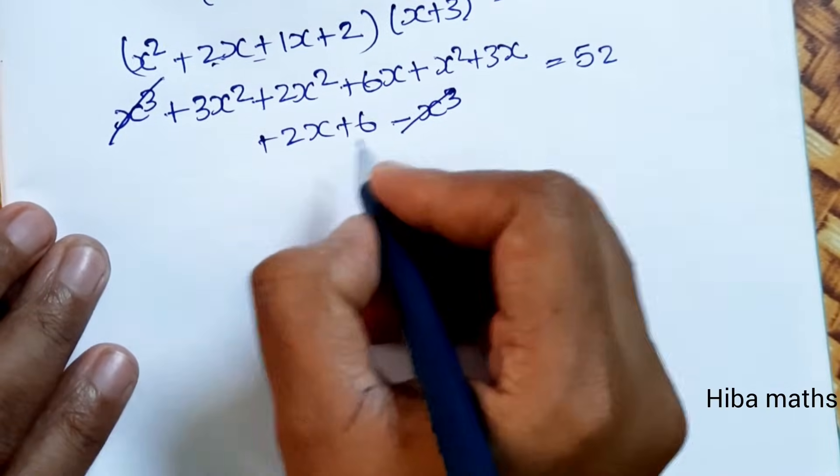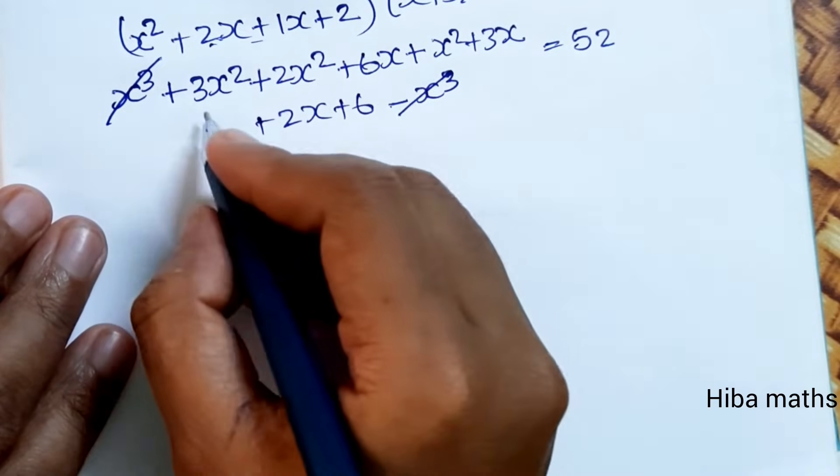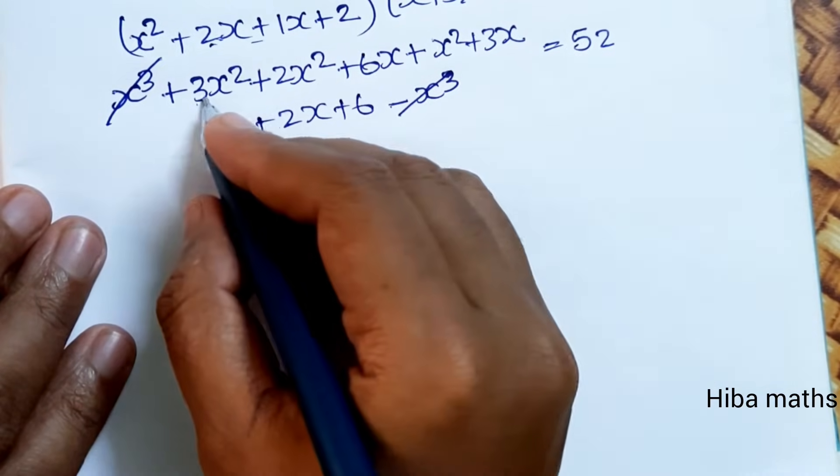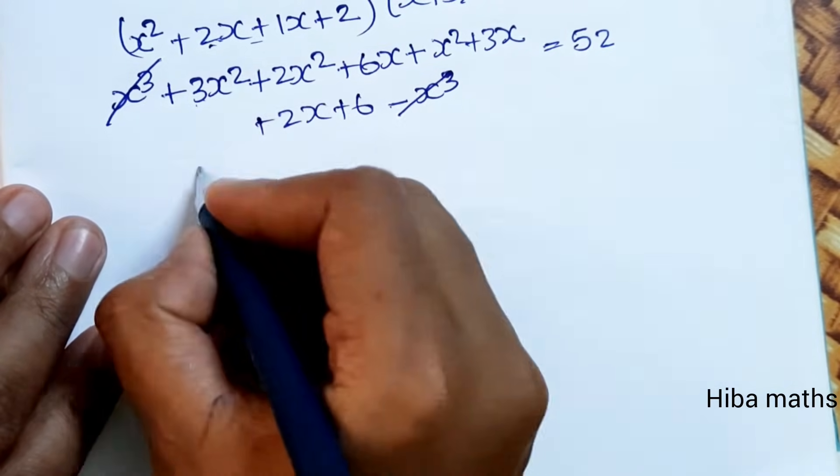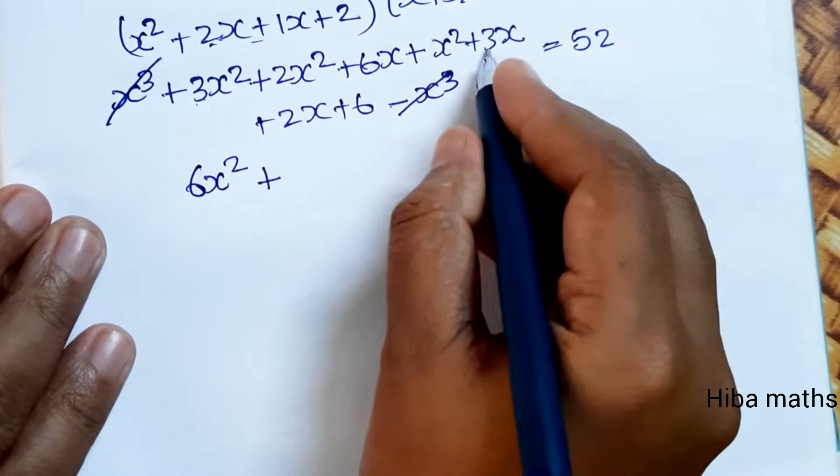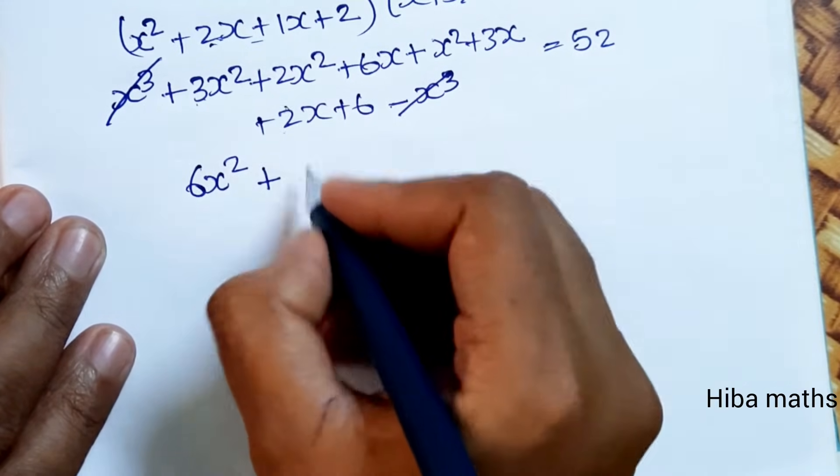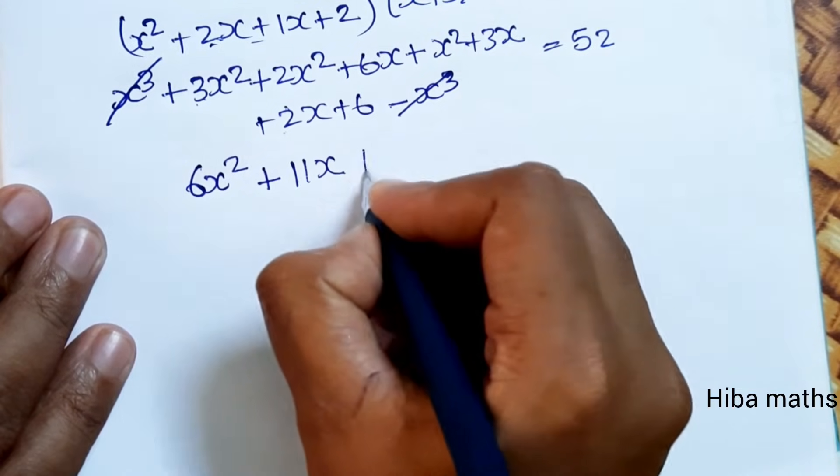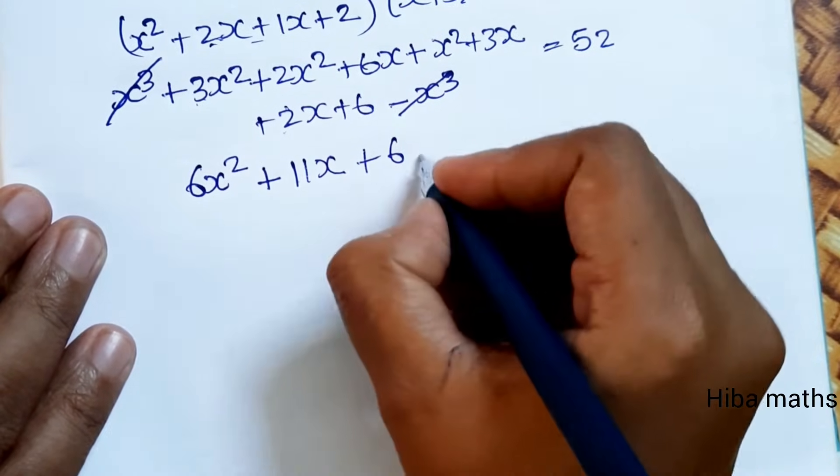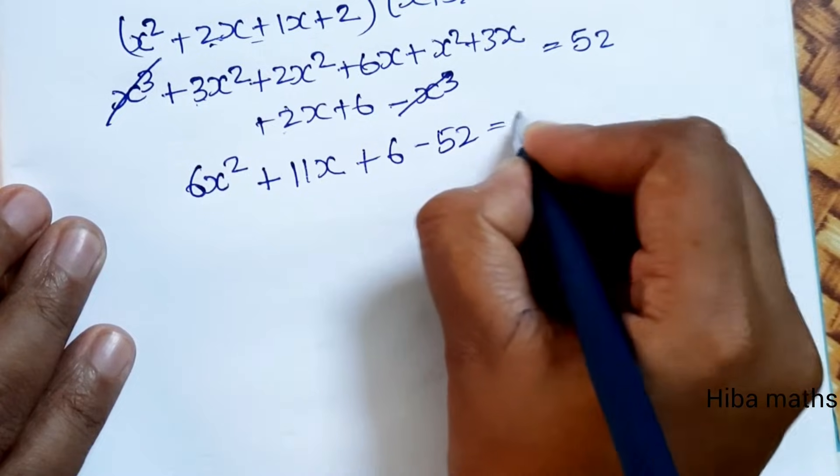x cubed minus x cubed cancels. Now x squared is 3, 2, 5 plus 1, 6x squared plus 6, 7, 8, 9, 10, 11x plus 6.